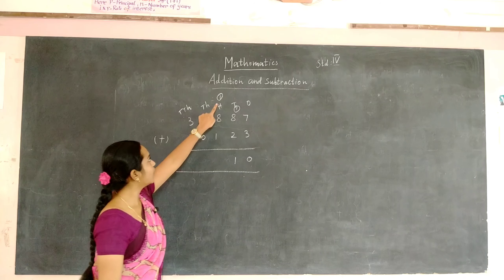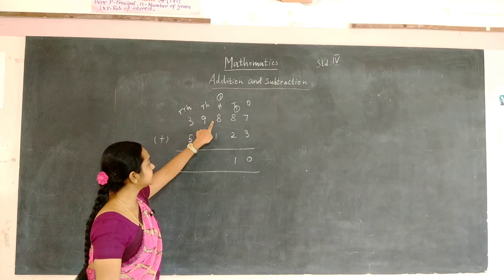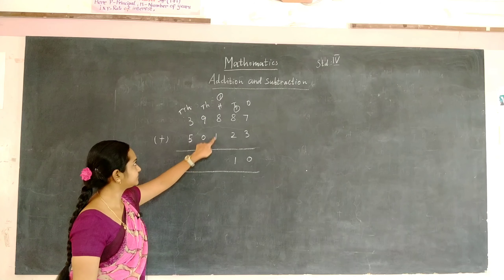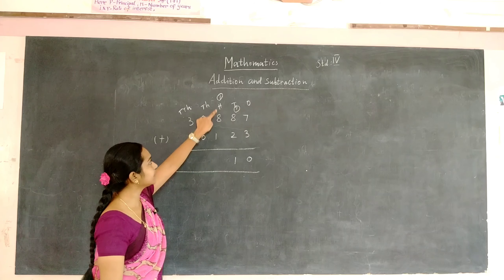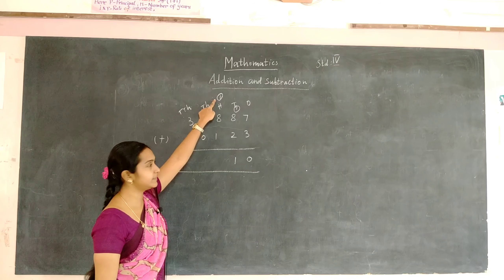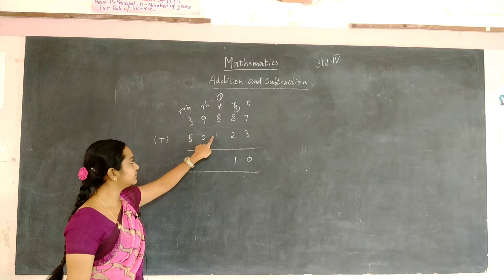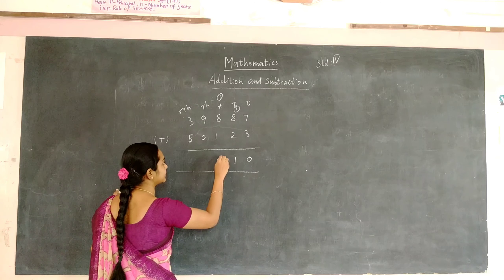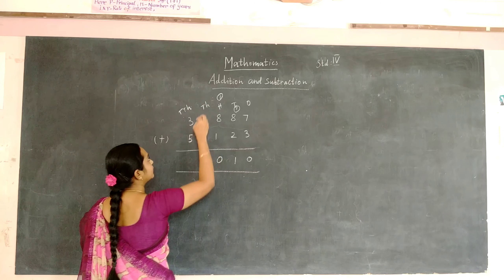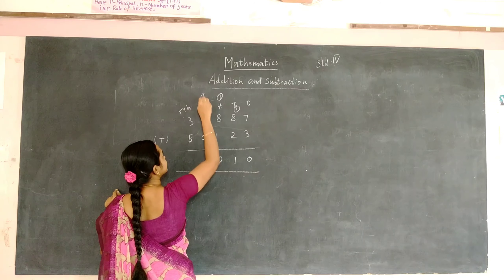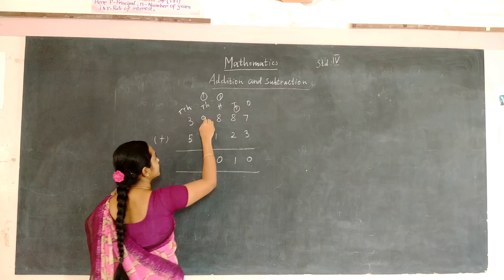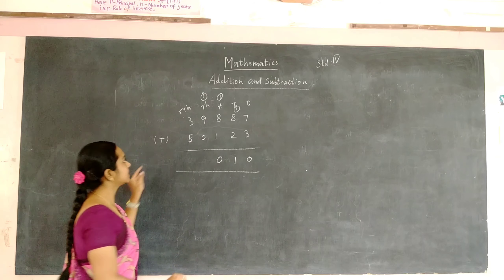Now we are going to add 1, 8, and 1. 8 plus 1 will be 9, and 9 plus 1 will be 10. So write 0 here and 1 will be carried to the 1000's place.